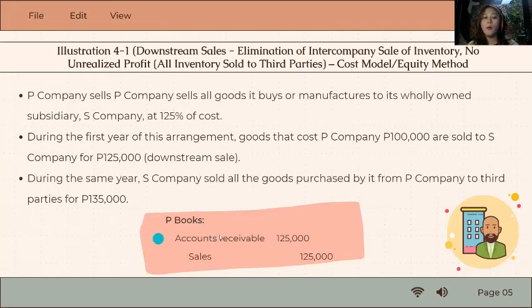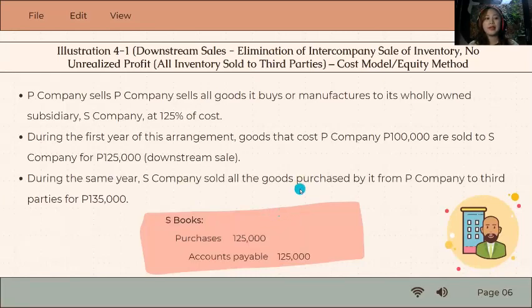Let's see how the parent records the transaction in its books. P company will debit accounts receivable for 125,000 and credit sales for 125,000. That's when the parent sells to the subsidiary—it records it in its individual books.